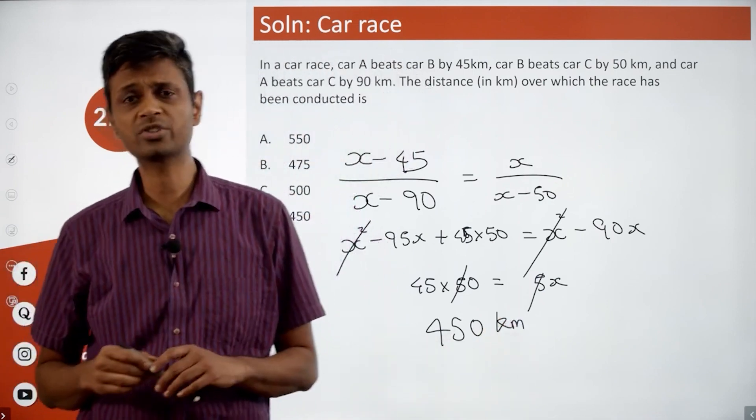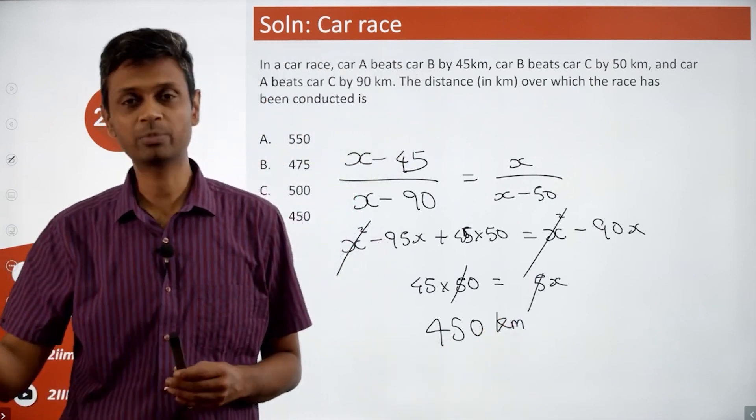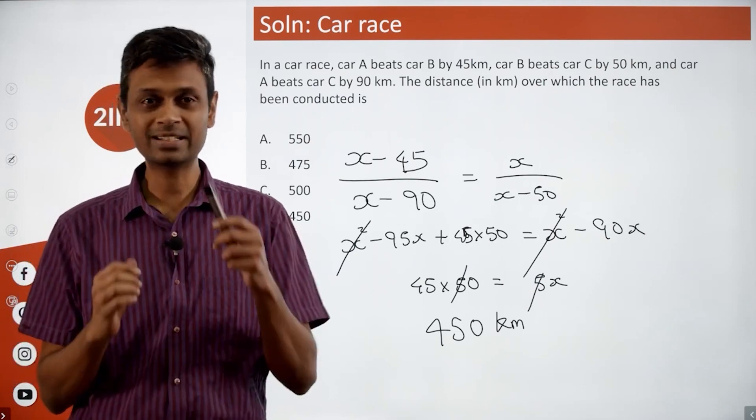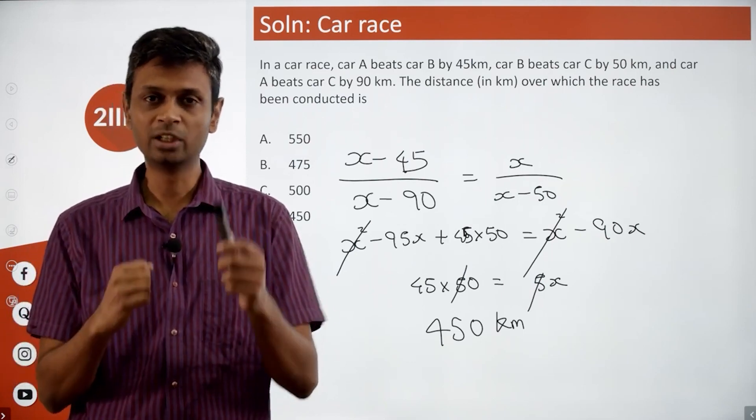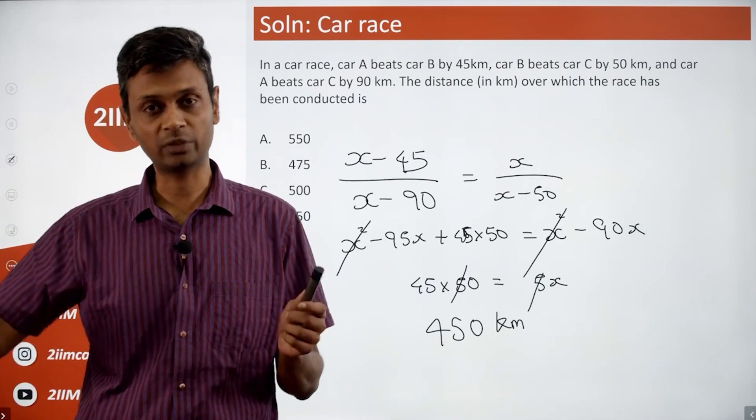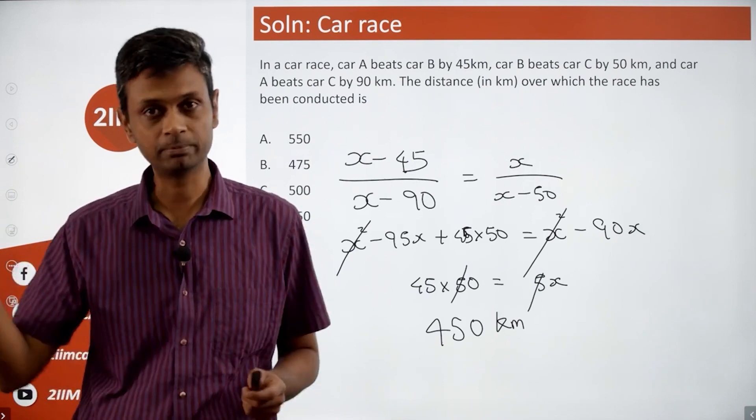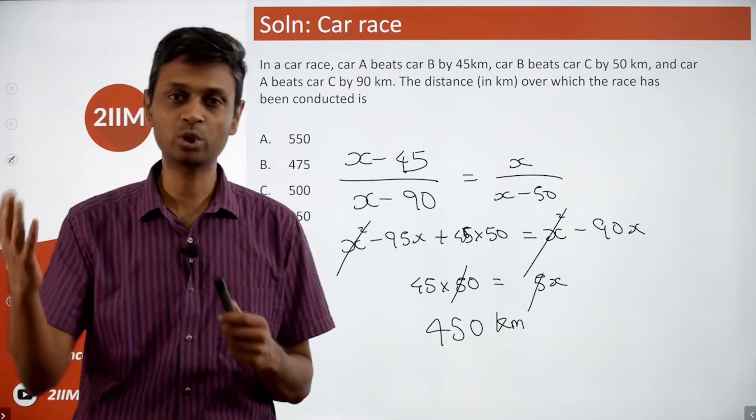A lot of these races questions just become ratio questions. And the distance traveled by A to distance traveled by B is always the same, no matter what the length of the race is. B to C always the same. And so just translate to ratio, we're good to go.